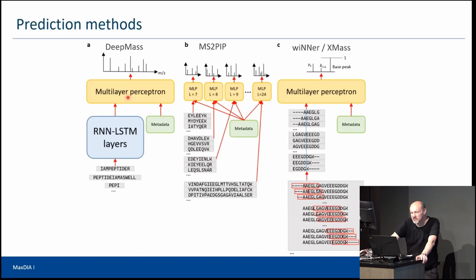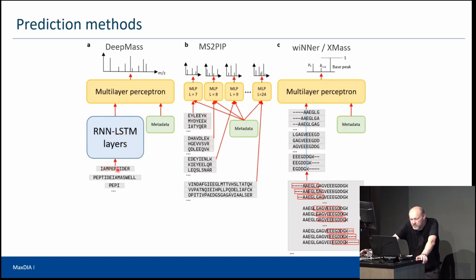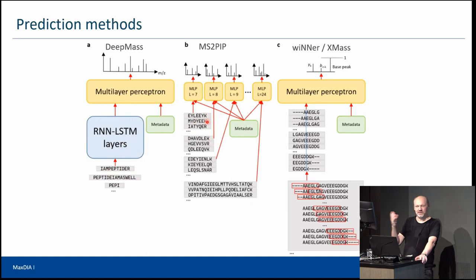There are also other approaches one can use as alternatives. For example, the MS2PIP approach is very simple: instead of considering sequences of different lengths simultaneously, you sort peptide sequences by length and make one predictor for length seven, one for length eight, one for length nine, and so on. This circumvents the problem that RNNs solve, but has the issue that if you haven't seen a peptide of a certain length in your training data, you cannot make predictions for that length.